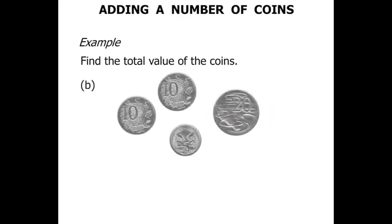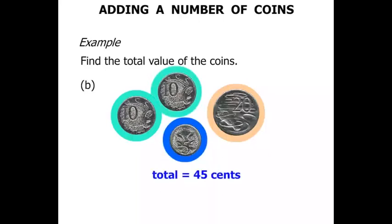The next one. A mixture of coins here. Let's start off with the largest value. So we've got twenty. And then ten is thirty. Ten more is forty. And then five more is forty-five. So the total equals forty-five cents.